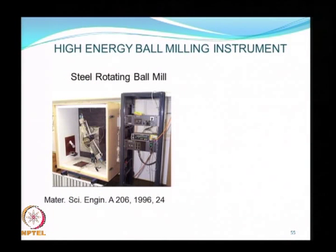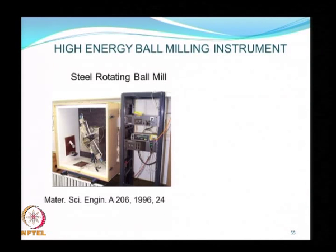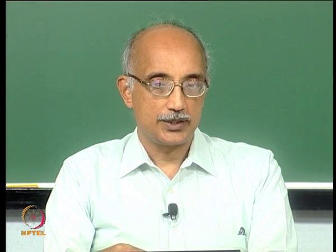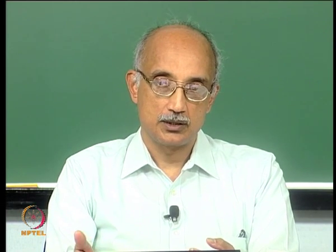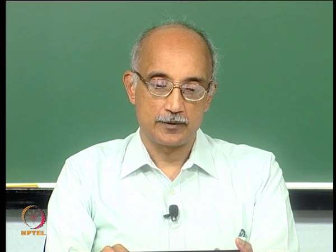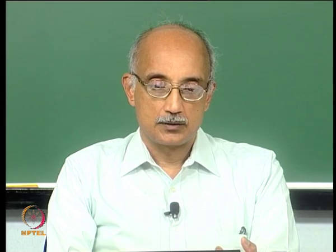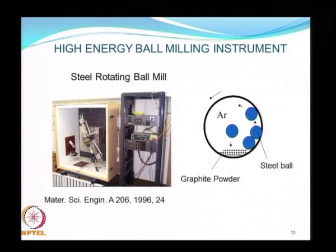More recently, advances in ball milling technology have produced the high energy ball mill, which is an improvement over the conventional ball mill in that it provides a more controlled operating environment. You can control the temperature inside the milling chamber, the pressure, and even the chemistry of the ball milling chamber to produce the desired product. In one example, the inside of the chamber is filled with argon—an inert material—to prevent oxidation, which is important when making metals such as aluminum or copper that oxidize readily in ambient air.